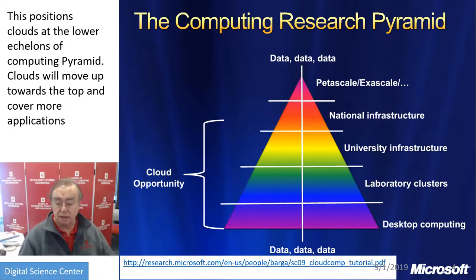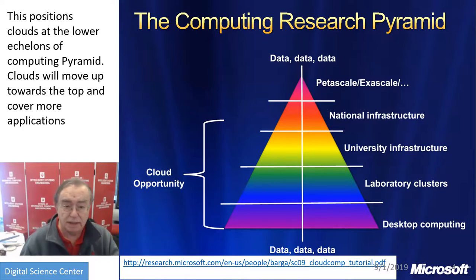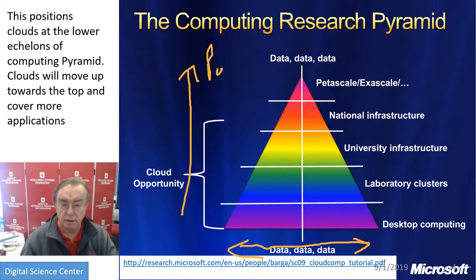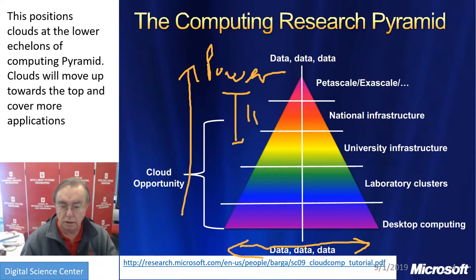Here's the computing pyramid. This came from a long time ago. Branscombe, who led a report from NSF or possibly the National Academy, produced this pyramid. The bottom represents the large number of people involved, and the top is fewer. We have desktop computing through national infrastructure, and I would put HPC cloud here. The main point is sort of trivial but emphasizes something important to remember: there is no single solution.